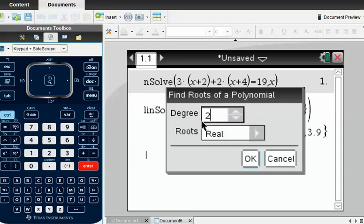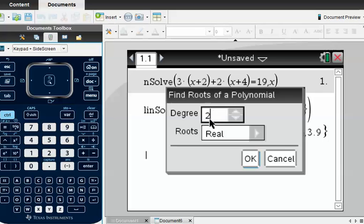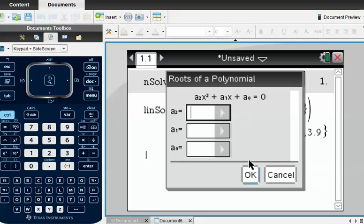So degree. Now, when it's a quadratic, the highest power is a 2. So it's asking you what the highest power is, and the highest power is a 2, and it's a real root, so just press OK on this. And you don't really need to do anything here anyway when it's quadratic, so just press OK.